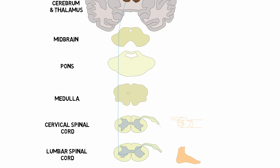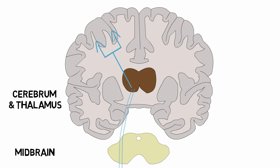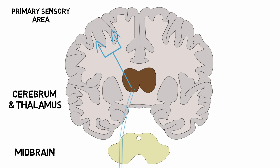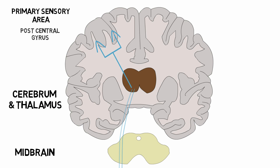In a similar way, nerve fibers from the upper part of the body enter at the cervical spinal cord, cross to the opposite side, and travel to the thalamus. In the thalamus, the 2nd order neurons form synapses with the 3rd order neurons. These neurons then project to the primary sensory cortex of the brain, also known as the post-central gyrus, where all these sensations are perceived.